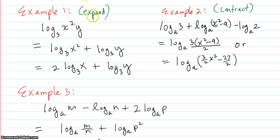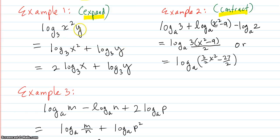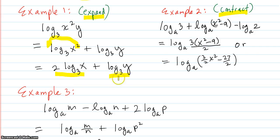Some examples — you'll usually be asked to either expand or contract logs. Example 1: log base 3 of x squared times y expands to log base 3 of x squared plus log base 3 of y. Then applying the power rule, bring the 2 to the front: 2 times log base 3 of x plus log base 3 of y. That's fully expanded.